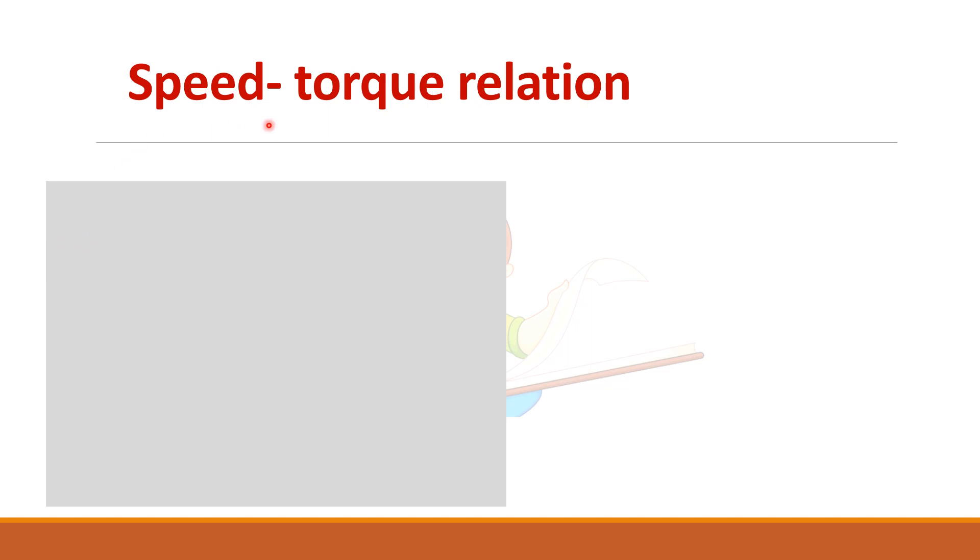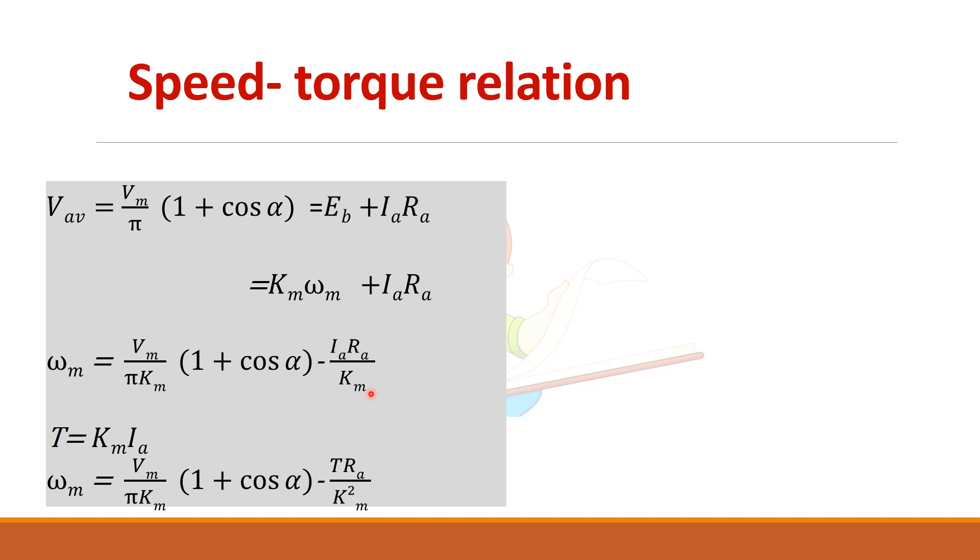Now we will derive the speed torque relation. So as I told in previous videos V average you write it Vm by pi into 1 plus cos alpha simply equate to Eb plus Ira. Then substitute Eb is equal to Km into omega m and then find what is omega m. And for torque you want torque relation. So torque is equal to Km into Ia. So instead of Ia you put T by Km here. So you will get the speed torque relation.